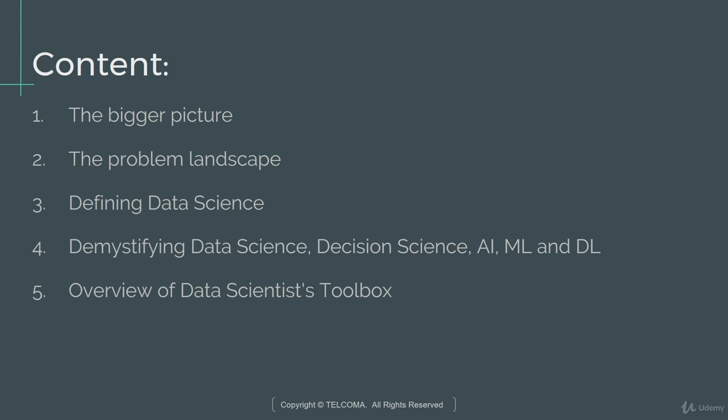Now, if you have ever explored data science earlier, you have definitely come across various ambiguous terms like decision science, artificial intelligence, machine learning, deep learning, and many more.